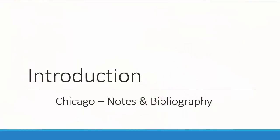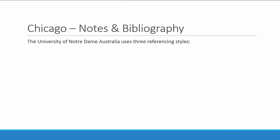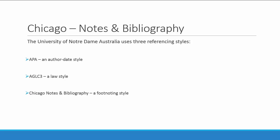Referencing is the way you show the reader where you found your information when writing an essay. There are many referencing styles, but the University of Notre Dame uses only three: APA, which is an author-date system; AGLC3, which is a law referencing style; and Chicago footnoting style, which is what we'll be looking at in this presentation.